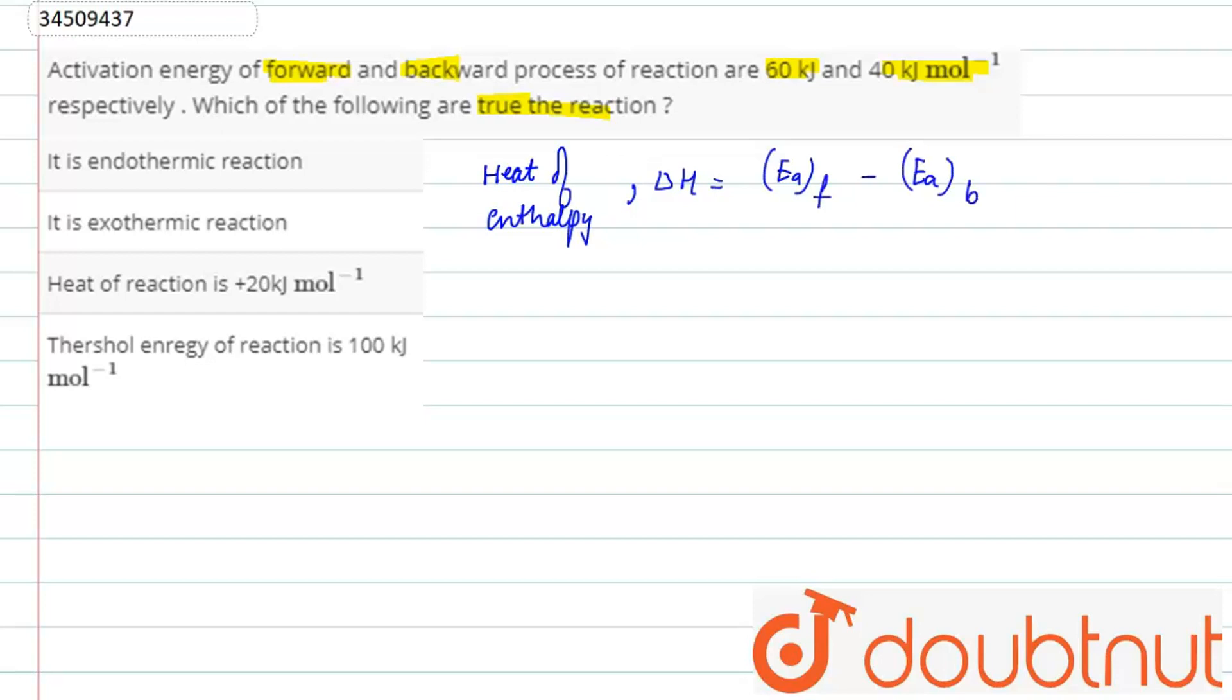As the activation energy of forward reaction is 60 and that of backward is 40, that means it will be 60 minus 40, that is positive 20 kJ per mole.